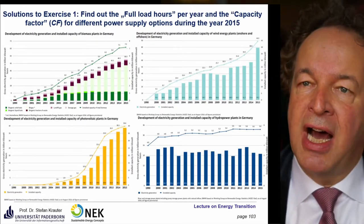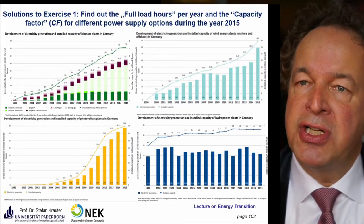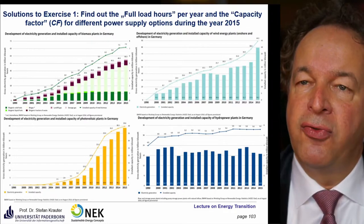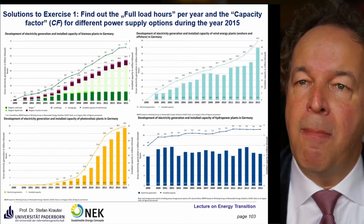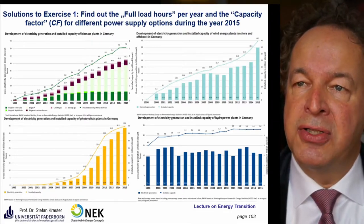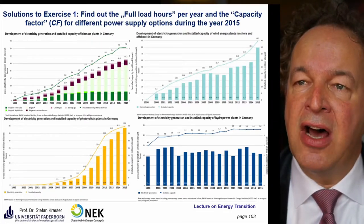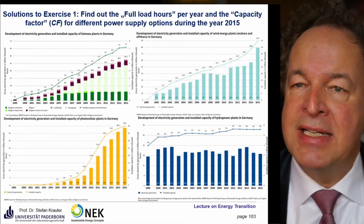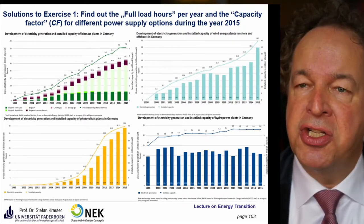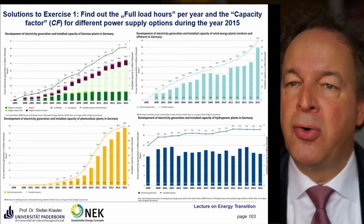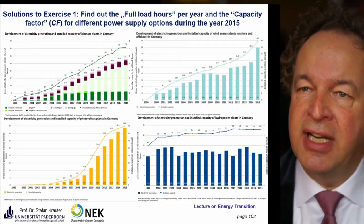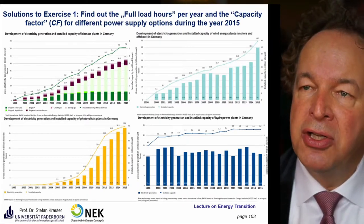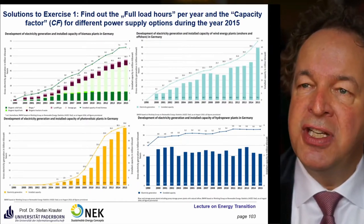This would be your task. First, we calculate the capacity factor and the full load hours for biomass on the top left, then for wind power on the top right, then for photovoltaic energy below on the left, and for hydropower for the year 2015 in Germany.